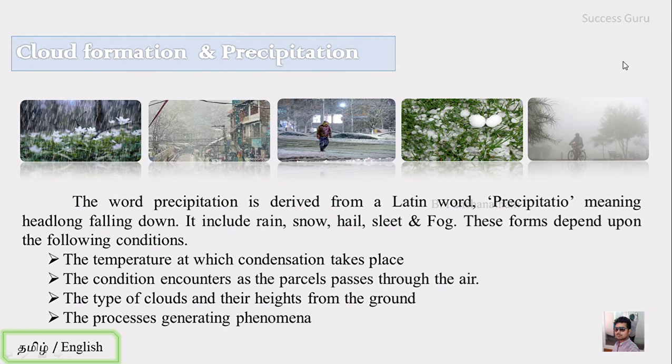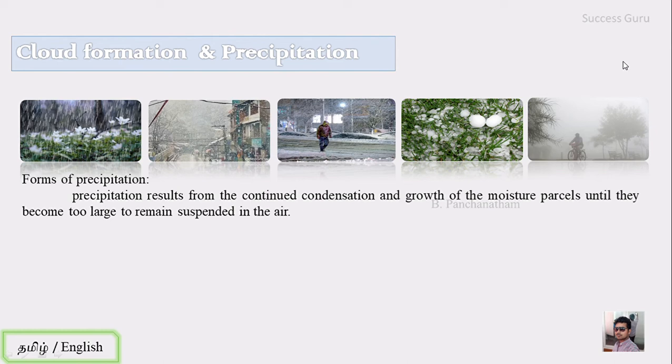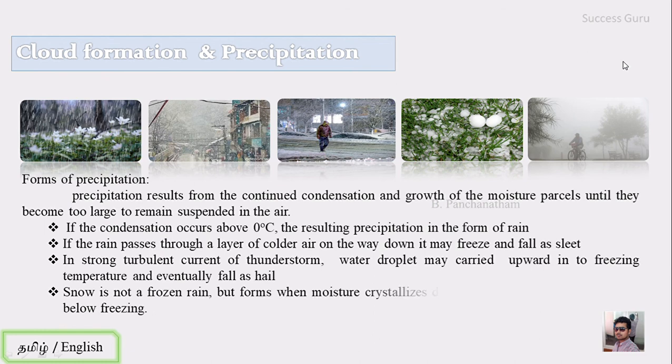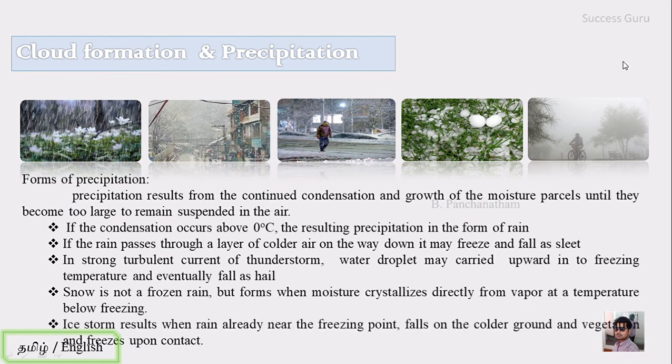Forms of precipitation: precipitation results from the continuous condensation and growth of moisture parcels until they become too large to remain suspended in the air. If condensation occurs just above zero degrees Celsius, the resulting precipitation will be in the form of rain. When condensation happens at any temperature above zero degrees Celsius, the result will be rain. If rain passes through a layer of cold air on the way down, it may freeze and fall as sleet.